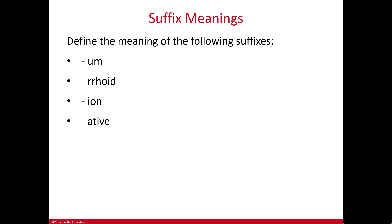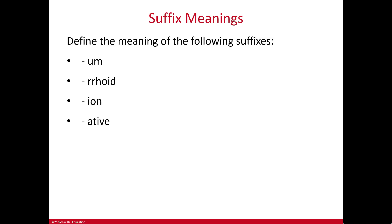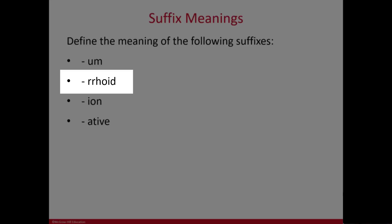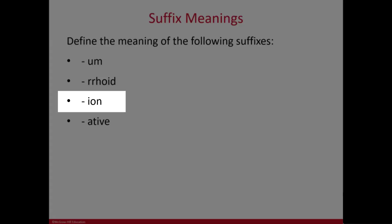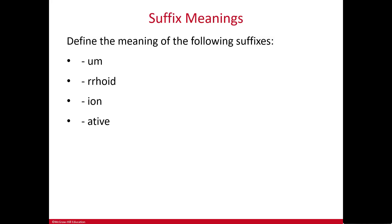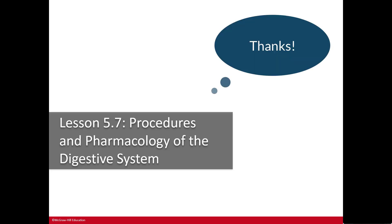Some terminology to add to your list: the suffix -um is a noun ending meaning a structure or tissue. The suffix -roid is similar to -rrhea and means flow, as in hemorrhoid. The suffix -ion means condition, process, or action. And -ative means pertaining to. That's it for this mini lesson — the next one will cover procedures and pharmacology for the digestive system.